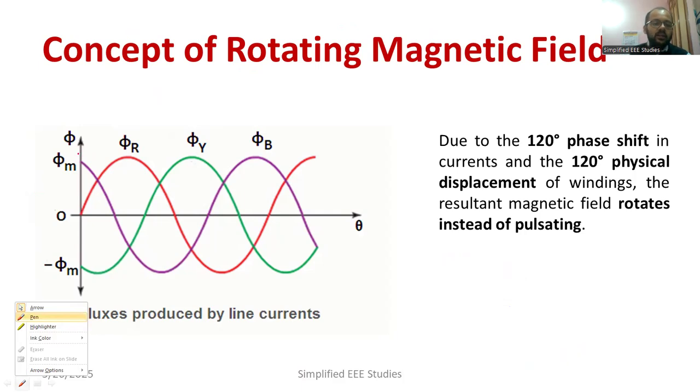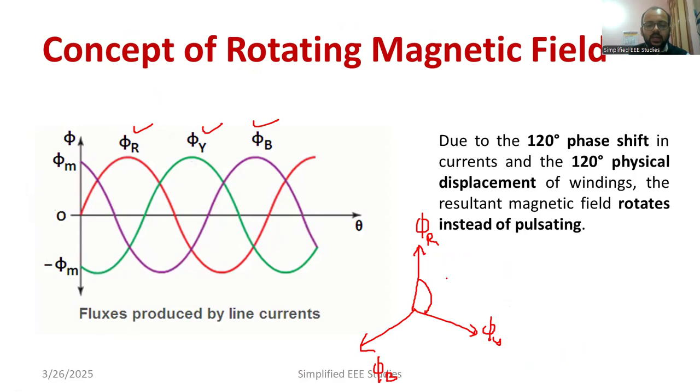The Rotating Magnetic Field is given by Φ_R, Φ_Y and Φ_B. Remember Φ_R, Φ_Y and Φ_B all are 120 degree apart. If I draw Φ_R, you can draw like this is Φ_Y and this will be Φ_B. Please do remember that all are 120 degree apart.